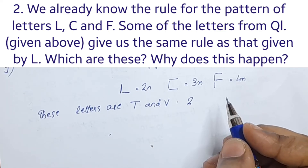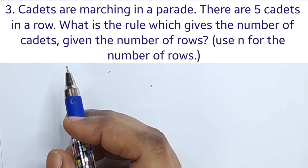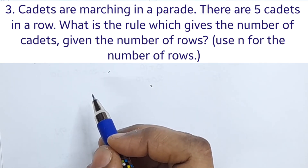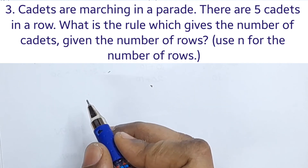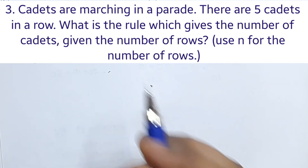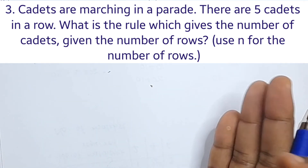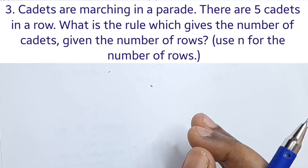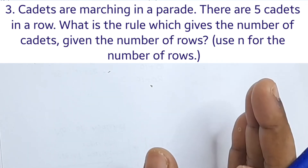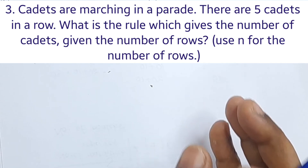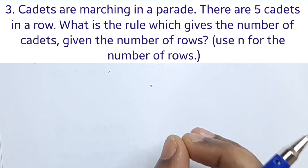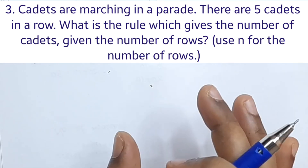Next, question number 3: cadets are marching in a parade. There are 5 cadets in a row. What is the rule which gives the number of cadets given the number of rows? Use n for the number of rows.